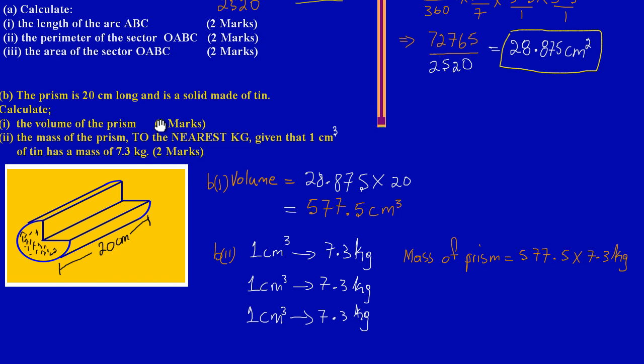Basically what we're doing now—if we pull up the calculator and multiply 577.5 times 7.3 kilograms, we would get a total of 4,215.75 kilograms.